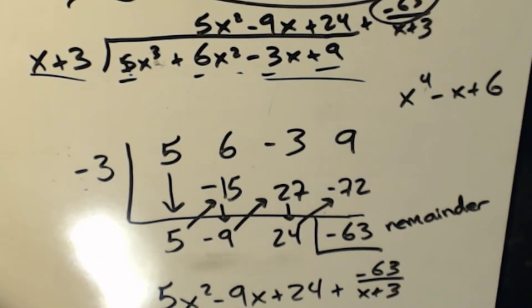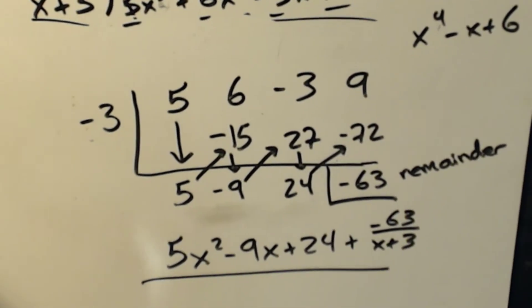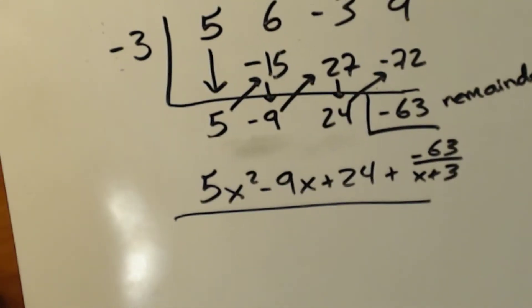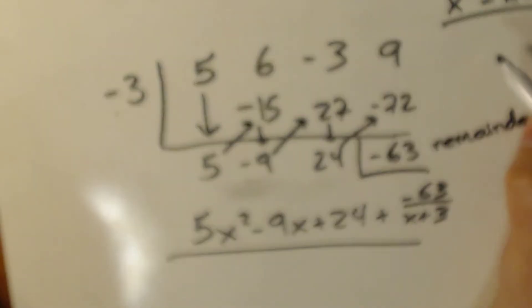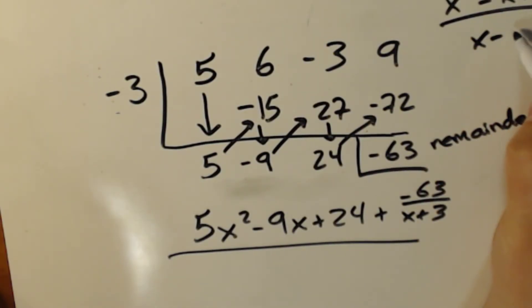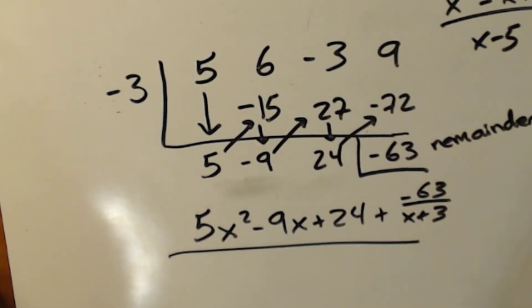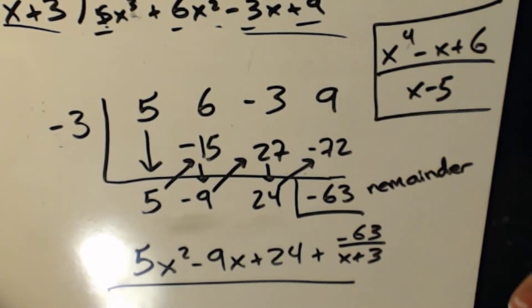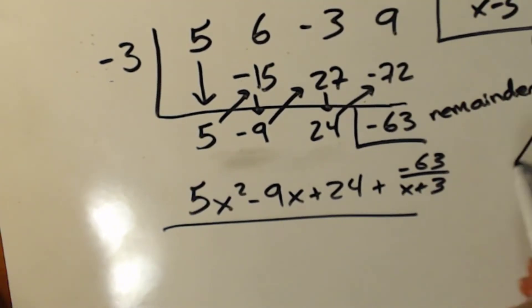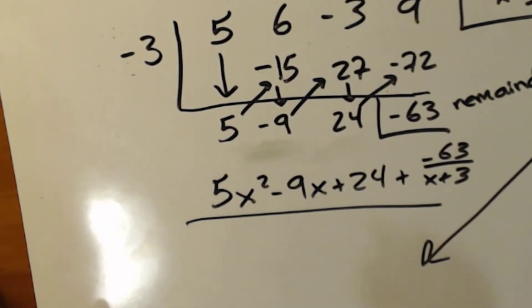So let's do another example. Let's do that x to the fourth minus x plus 6, since I wrote it out. It's going to be kind of boring. Let's just divide it by x minus 5. This is a different problem altogether. x to the fourth minus x plus 6 divided by x minus 5.